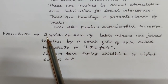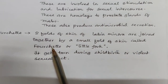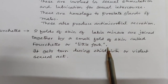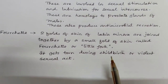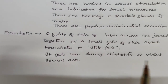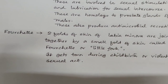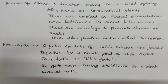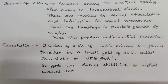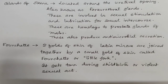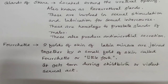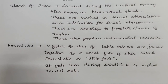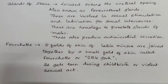The fourchette, or little fork, is where the two folds of skin of the labia minora are joined together by a small fold of skin. It can get torn during childbirth or a violent sexual act. With this we end our discussion on external genitalia. Please subscribe and share the video so that others can benefit as well. Thank you.